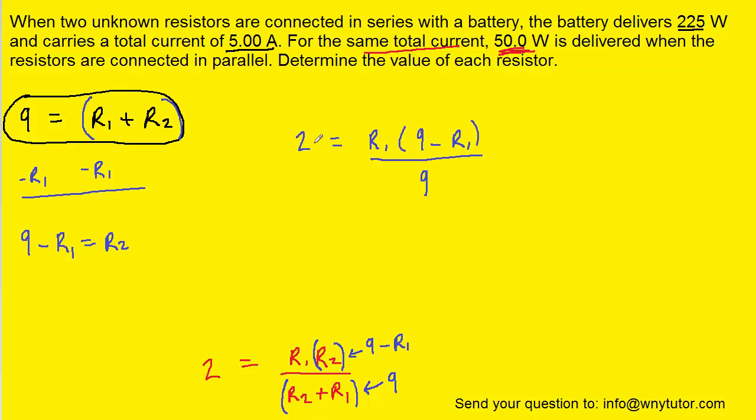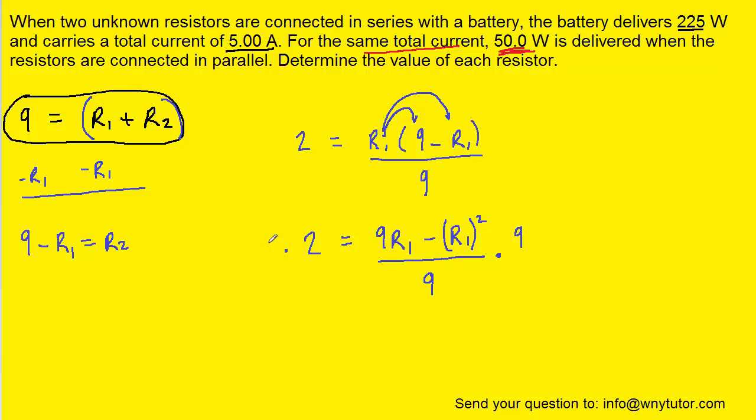What's nice about this equation is that it has only one variable, R1, and so we can start to actually solve for one of the resistances. We'll go ahead and distribute the R1 into the parentheses. We can then multiply both sides of the equation by 9. And of course, the 9s will cancel here.